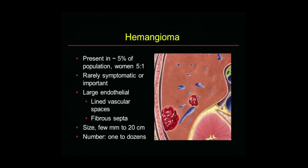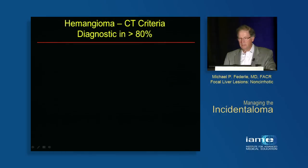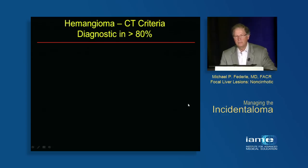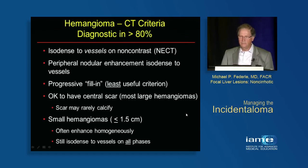Hemangiomas — dime a dozen, we see these literally every day. Women more than men. It's basically a bag of blood with fibrous septa and vascular spaces. They range in size from a few millimeters to 20 centimeters, can be solitary or dozens of lesions. Some textbooks still say you can diagnose hemangiomas correctly on CT in only 50% of cases — that is absolutely wrong. If you use the right criteria and technique, you should be able to diagnose hemangiomas confidently in over 80% of cases.